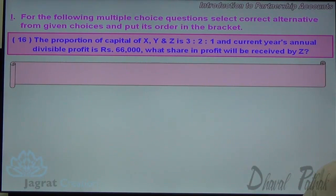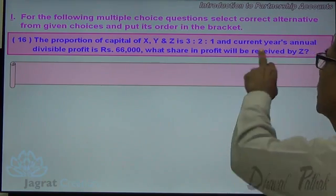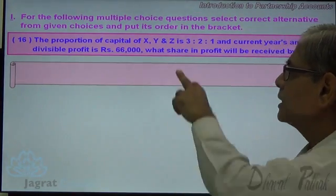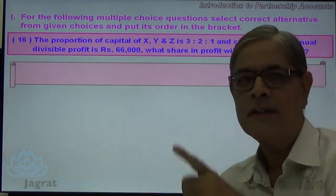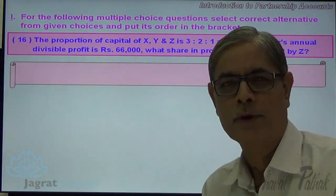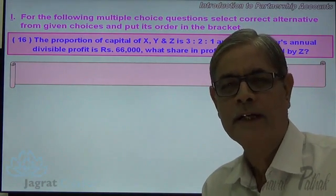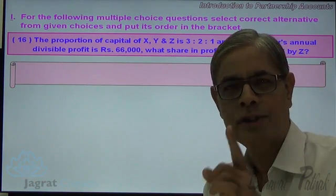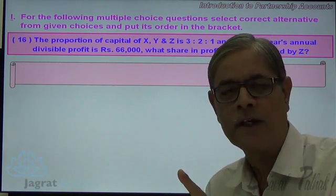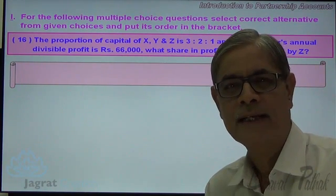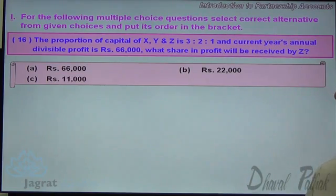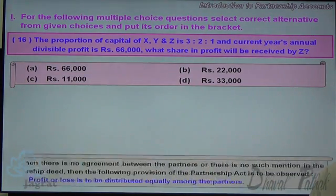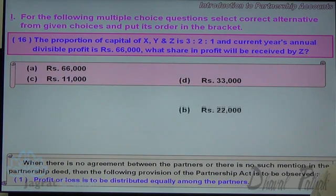Next. The proportion of capital of X, Y, Z is 3:2:1 and the current annual divisible profit is 66,000. What share in profit will be received by Z? The capital proportion is given, but since no profit sharing ratio is mentioned, it is presumed to be equal. So 66,000 is distributed equally amongst three partners, and Z gets one-third of 66,000, which is 22,000. That is the correct answer.